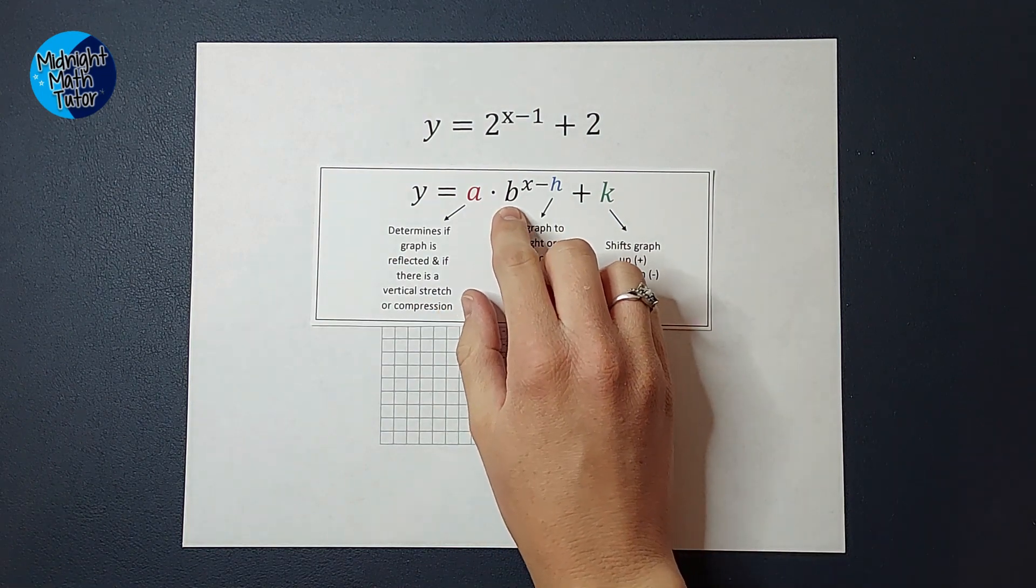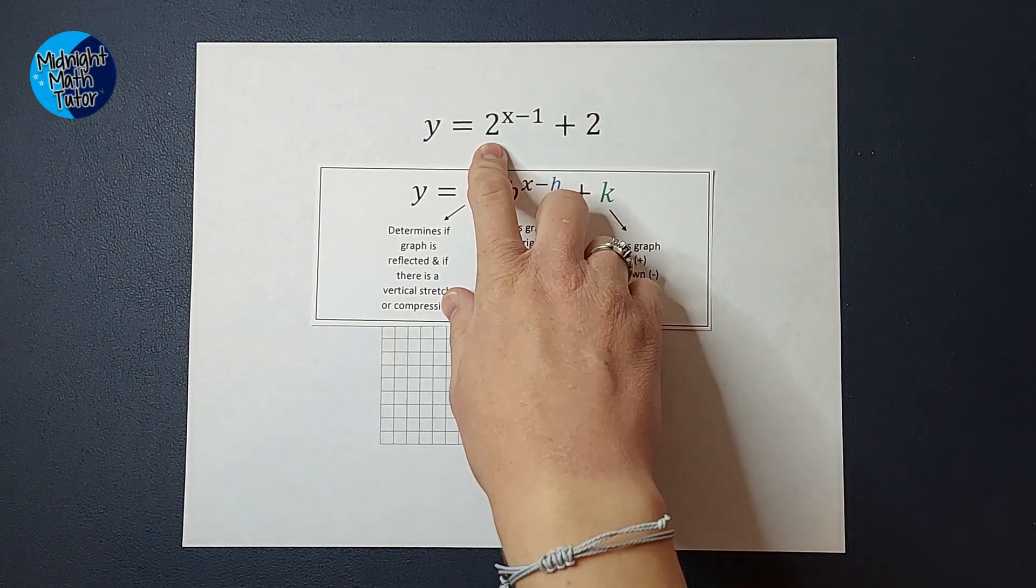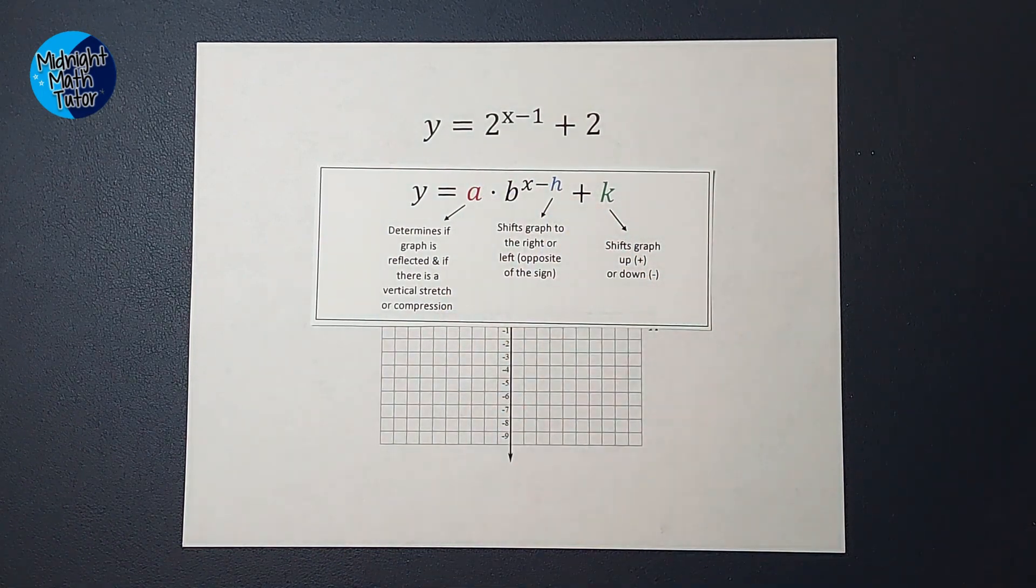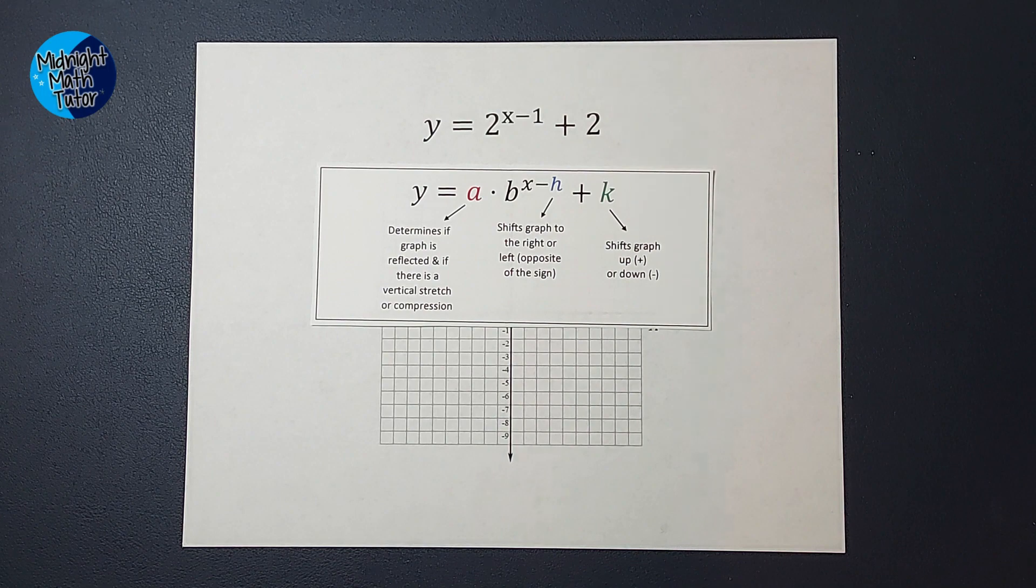This is what makes these a little bit different right here is this b, because in this equation it's a 2, but it's not always going to be a 2. I could have a different number there. Depending on what number is there is what my parent graph will look like.